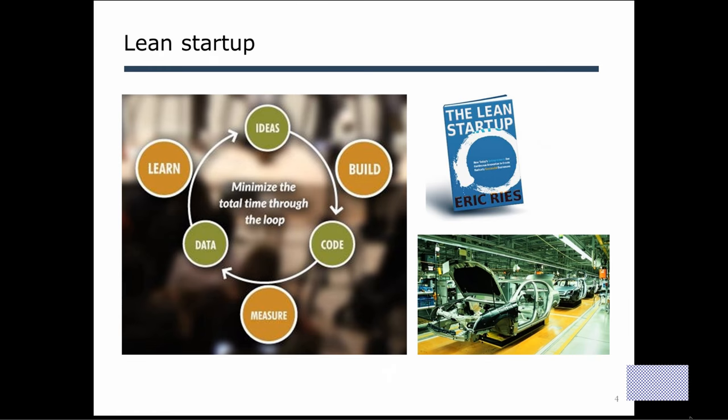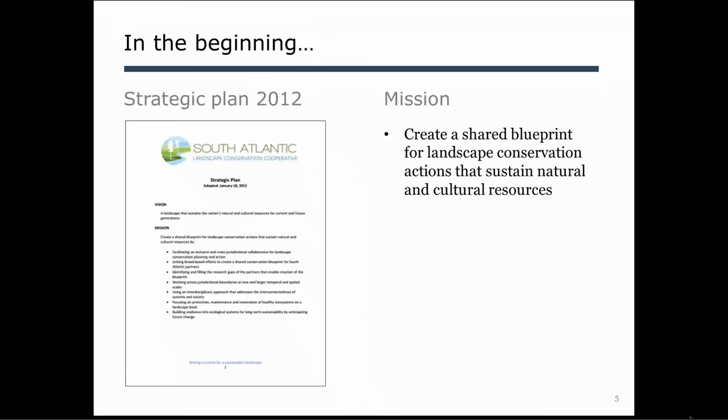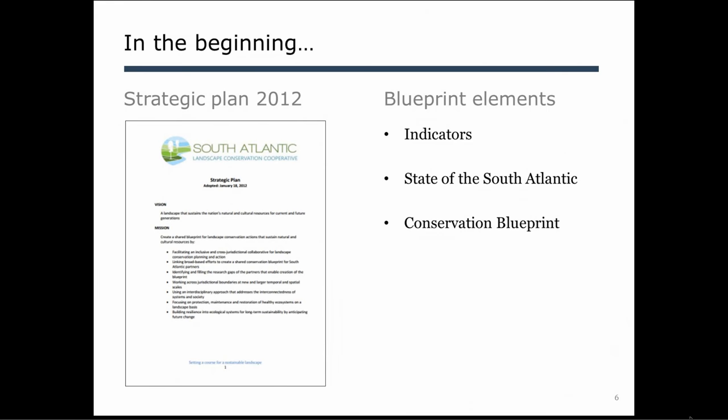Let's start at the very beginning. Back in 2012, as a fairly young cooperative, we came up with a greater strategic plan asking: what's our niche? What do we want to do as a broader cooperative? The cooperative came up with a three- to five-year mission to create a shared blueprint for conservation actions for natural and cultural resources — we were going to do great things, but we really wanted some kind of shared blueprint for action, with a goal to accomplish that in three to five years.